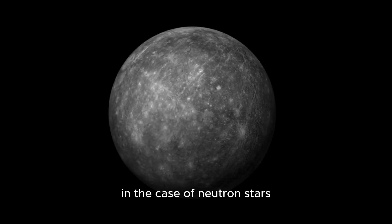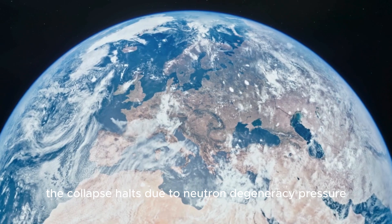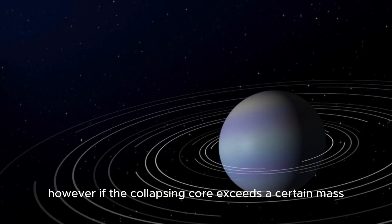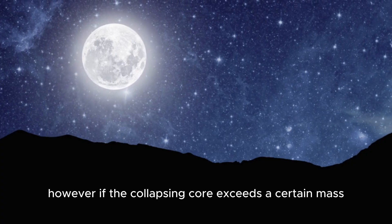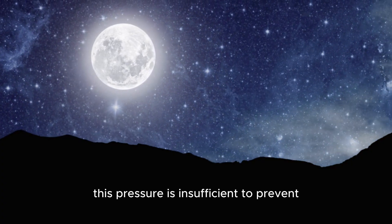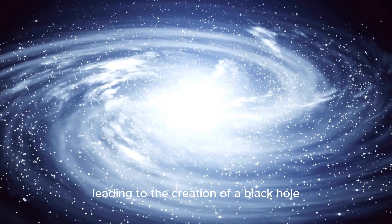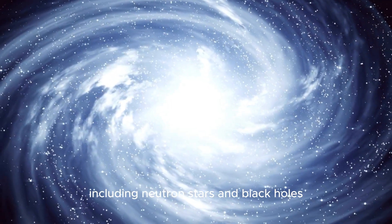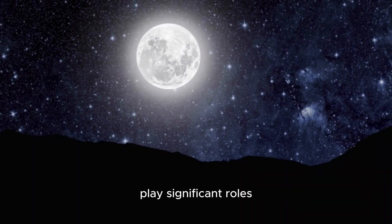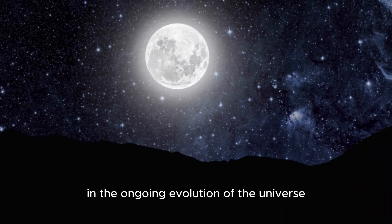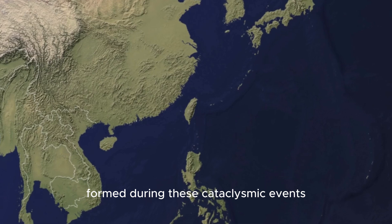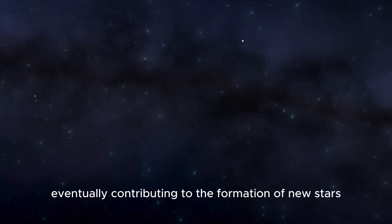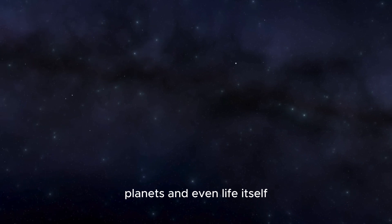In the case of neutron stars, the collapse halts due to neutron degeneracy pressure, leading to the formation of an ultradense neutron star. However, if the collapsing core exceeds a certain mass, this pressure is insufficient to prevent further collapse, leading to the creation of a black hole. The remnants of supernova explosions, including neutron stars and black holes, play significant roles in the ongoing evolution of the universe. The heavy elements formed during these cataclysmic events are dispersed into space, eventually contributing to the formation of new stars, planets, and even life itself.